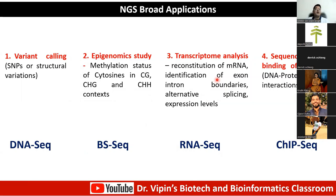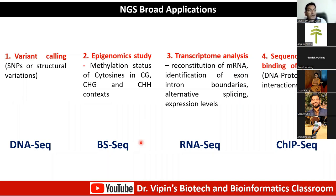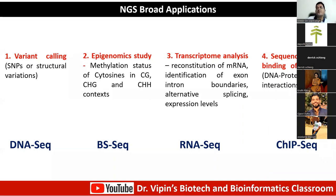Broad applications include variant calling from DNA-seq to identify variants in an individual genome and look at how those variations impact wellness. You could do an epigenomic study — methylation status of cytosines in CG and CHH context in plants using bisulfite sequencing. With Nanopore or PacBio long-read sequencers, the readout for epigenetic state is automatic. There is also transcriptome analysis via RNA-seq, protein-DNA interaction via ChIP-seq analysis, and chromatin state analysis via ATAC-seq.